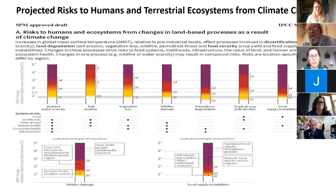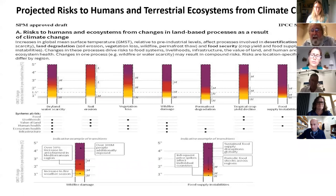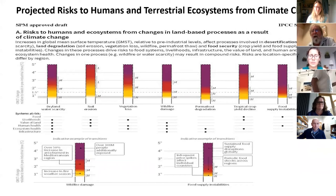For terrestrial ecosystems, risks range from water scarcity in dry lands, soil erosion, and vegetation loss, to tropical crop decline. Moderate risk occurs between one and two degrees Celsius, and high to very high risk starts around two degrees Celsius. Our terrestrial systems are extremely vulnerable to one, two, and three degrees of temperature increase.